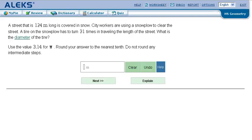We are dealing with circumference ratios. It says a street is 124 meters long and is covered by snow. City workers are using a snowplow to clear the street. The tire on the snowplow has to turn 31 times to travel the length of the street. What is the diameter of the tire?